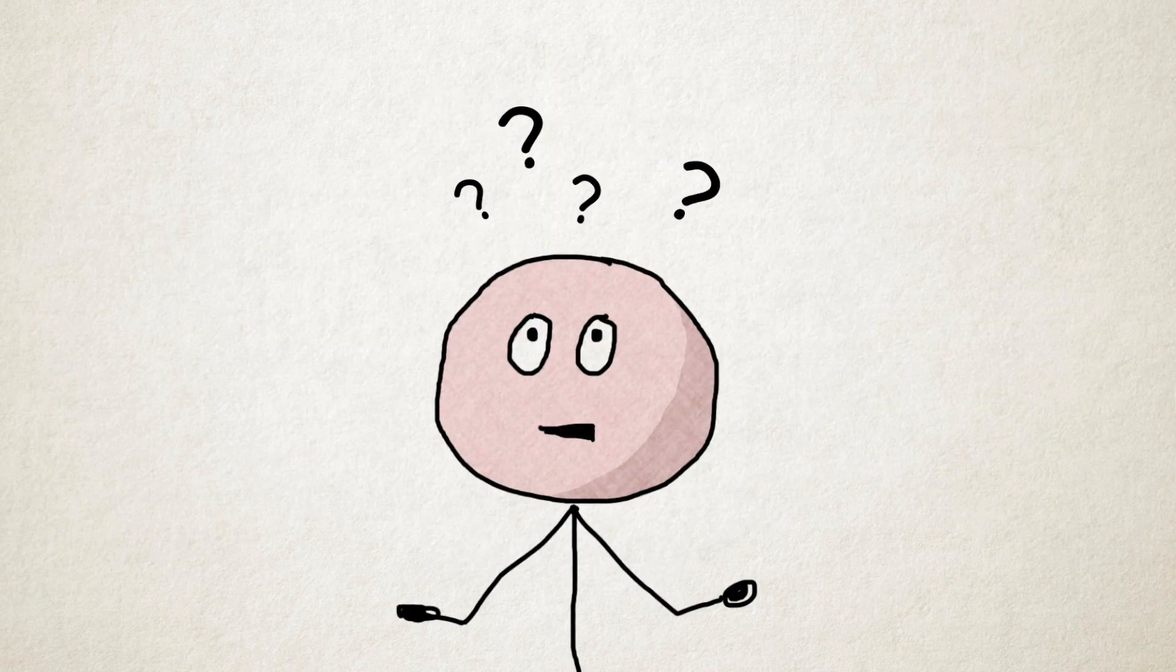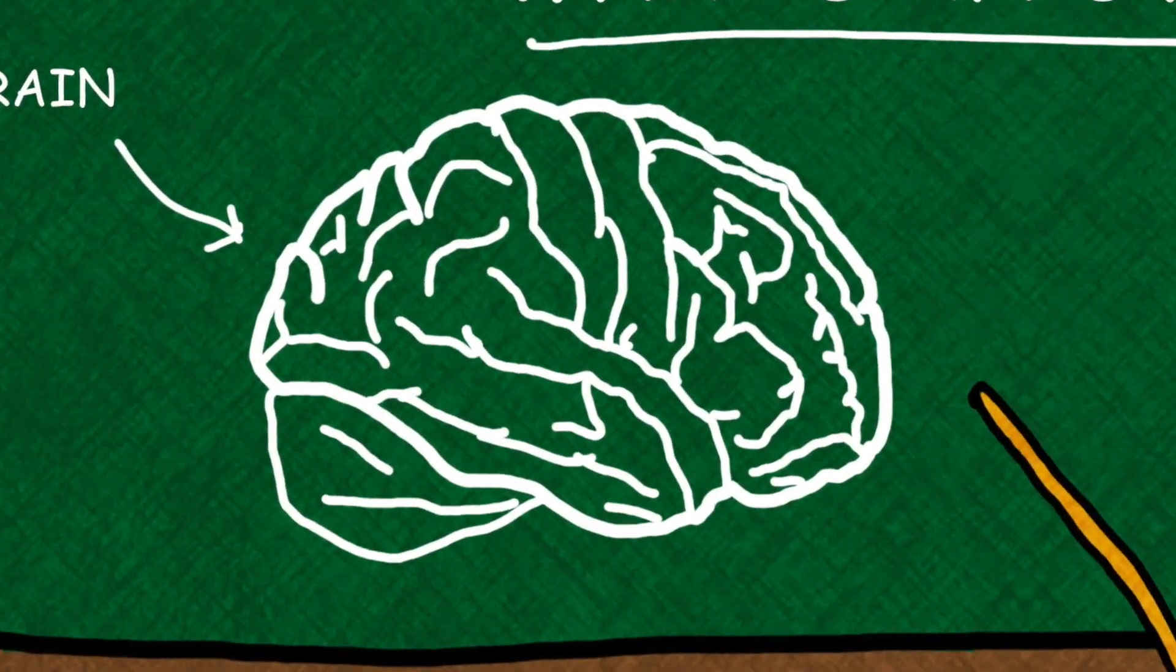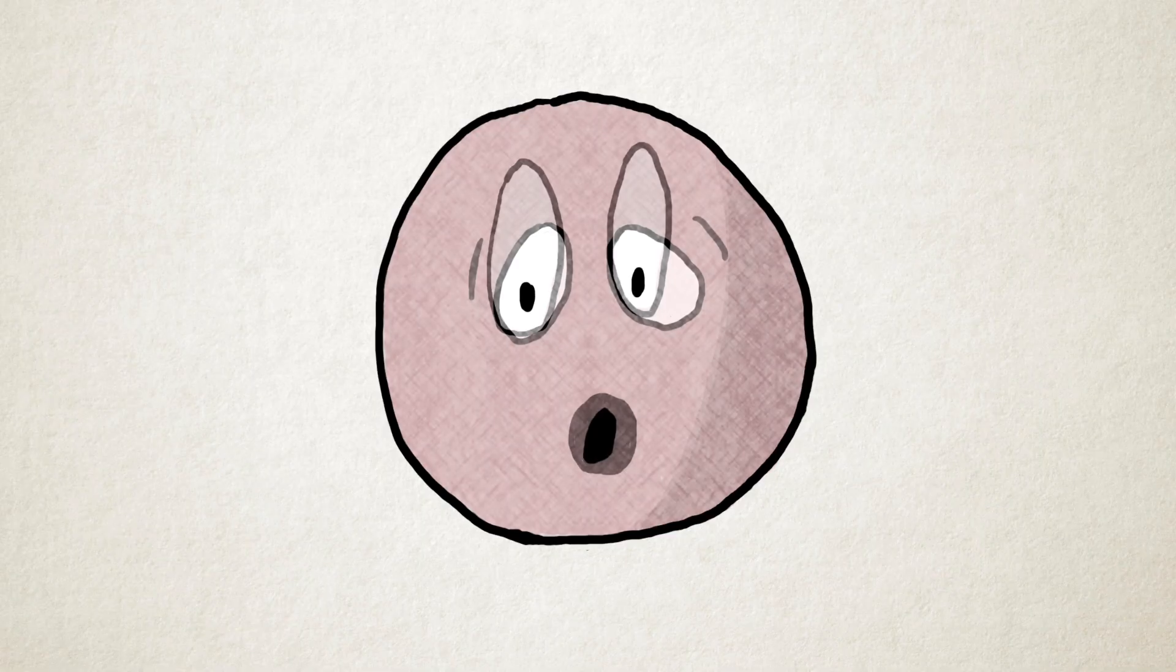Sounds complicated, right? Well, actually, no. Overdose is quite simple to understand. When someone overdoses, it means that too many receptors in their brain are filled with opioids. This causes the person to stop breathing.